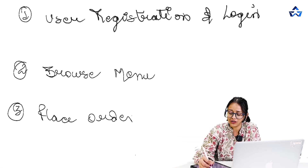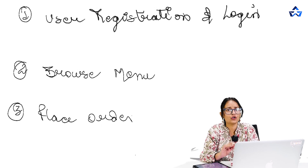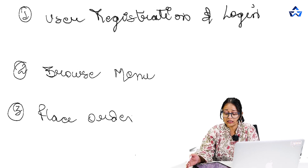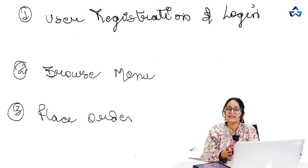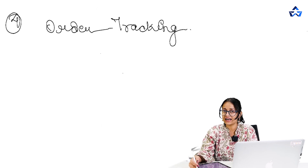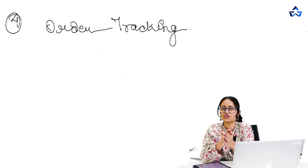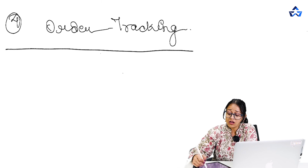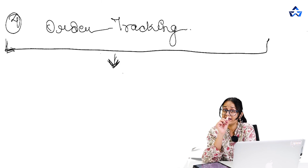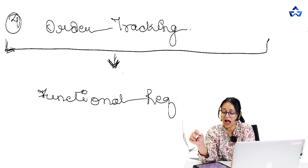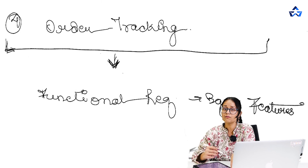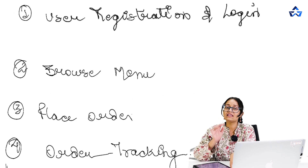Let's understand functional requirements with an easy example. Suppose we are building an app similar to Zomato or Swiggy. What we need to focus on: first, user registration and login; second, the user must be able to browse restaurants and menus; third, the user should be able to place orders seamlessly; and lastly, the user should be able to track their order. All these core features together are the functional requirements of the app, because they make the app efficient and functional.